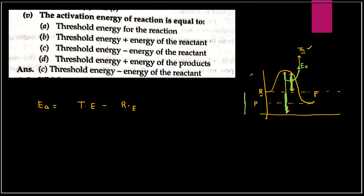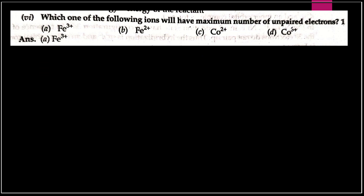Threshold energy is your minimum required energy; reactant energy is what they already possess. Activation energy = threshold energy minus reactant energy. Question number six: which one of the following ions will have the maximum number of unpaired electrons? We need to write the electronic configuration and count unpaired electrons. What is the number of unpaired electrons in Co3+?